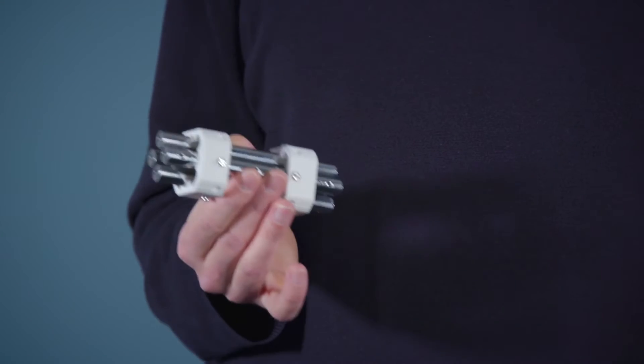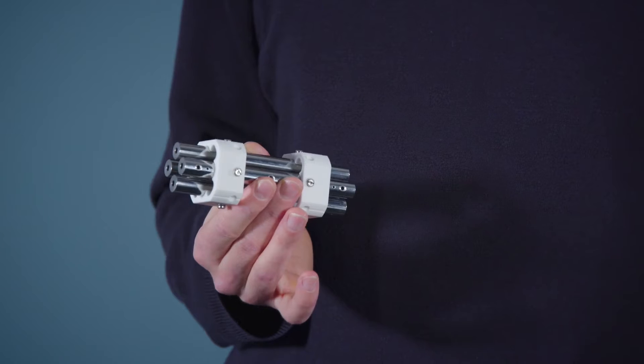So, a quadrupole is a mass analyzer. It consists of four parallel rods arranged around the central axis, as shown.